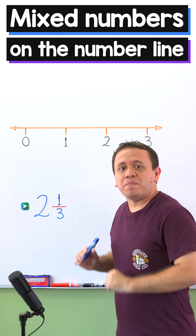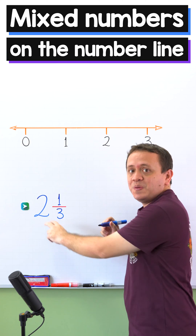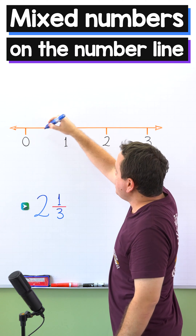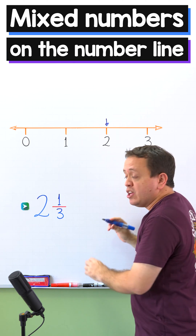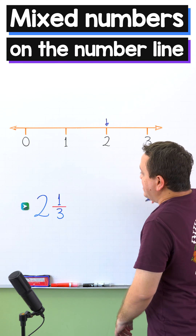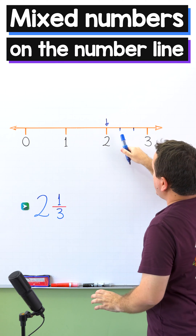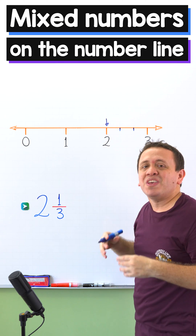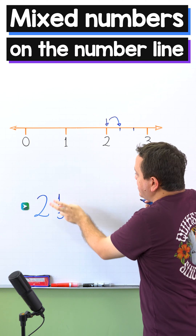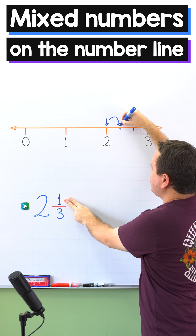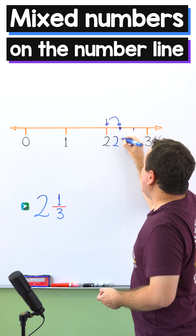In the next example we're going to locate the mixed number two and one-third on the number line. This mixed number contains two wholes, so first we need to locate two on the number line. Here we have zero, one, and two. Now we need to add the fraction one-third, so we take the line segment between two and its successor three. Since the denominator is three, we divide the segment into three equal parts. Now we have one, two, and three equal parts. Finally, since the numerator is one, starting from two we move to the right one part. And this is the location of the mixed number two and one-third.